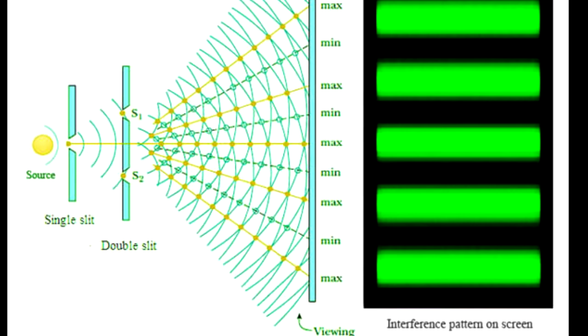Here we have two slits placed close to each other and a light source. As classically predicted by the wave nature of light, waves coming out of both of these slits interfere forming subsequent light and dark fringes on the screen.